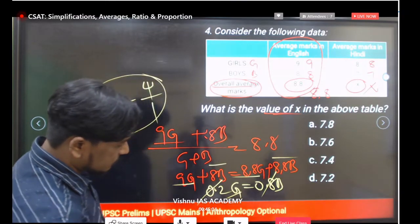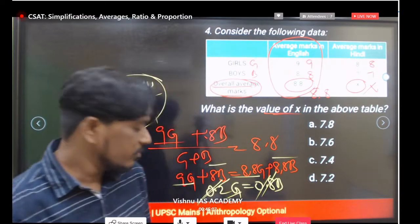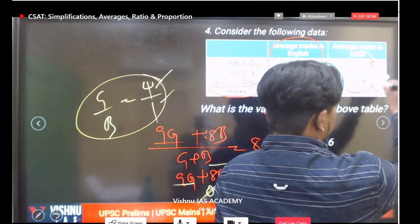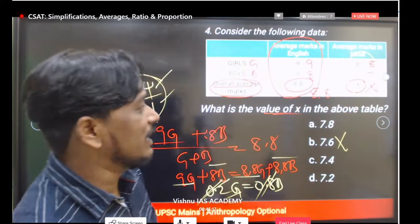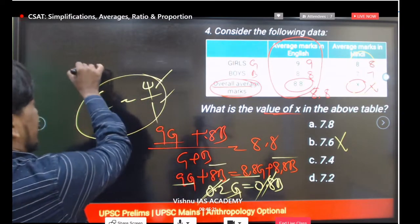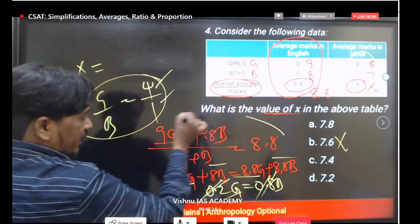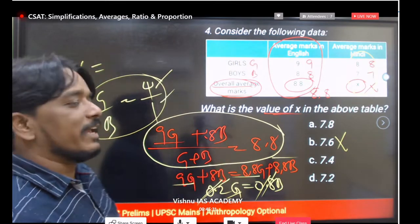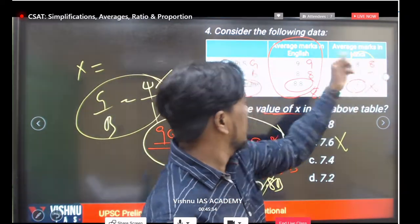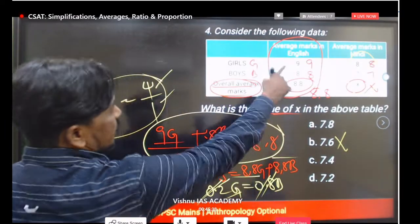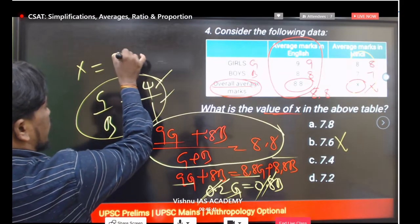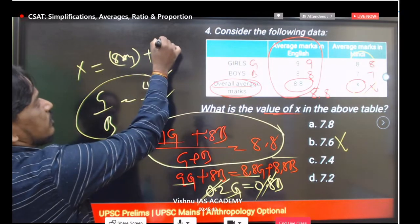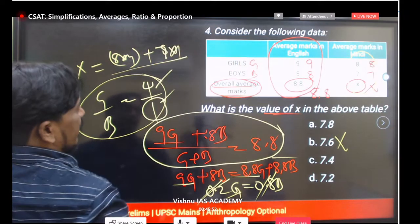Girls to boys ratio is 4 to 1. Now use this to calculate x — the overall average marks in Hindi. Substituting: girls average in Hindi is 8 and boys is 7. So x equals 8 into 4 plus 7 into 1, divided by 4 plus 1.